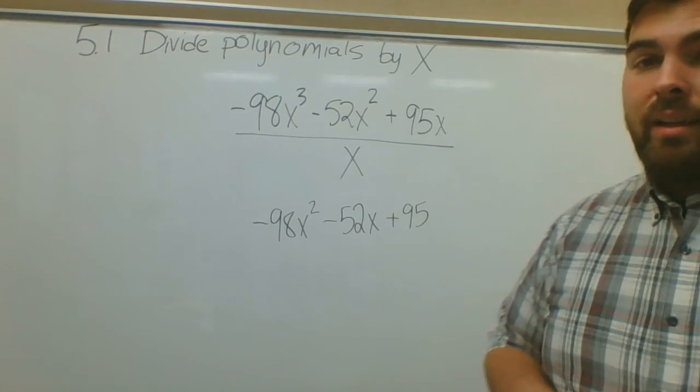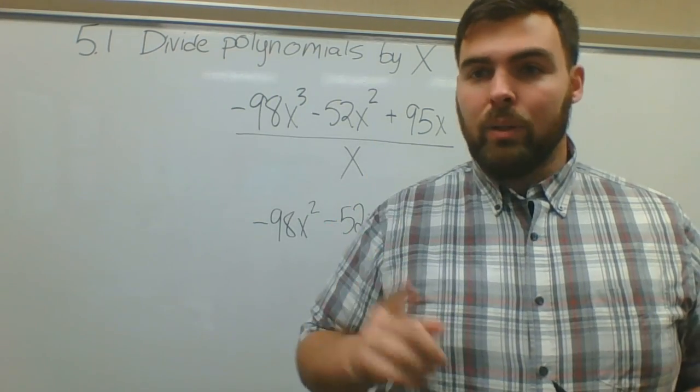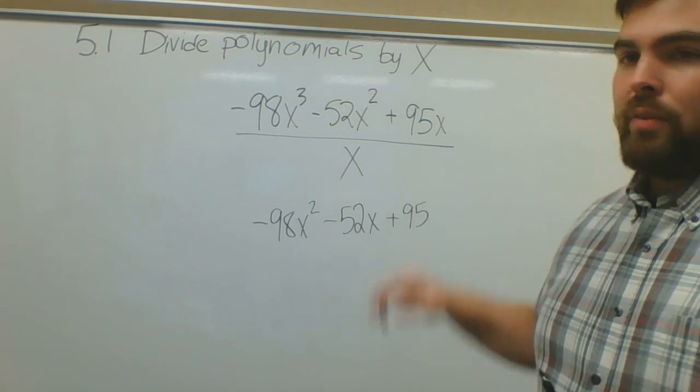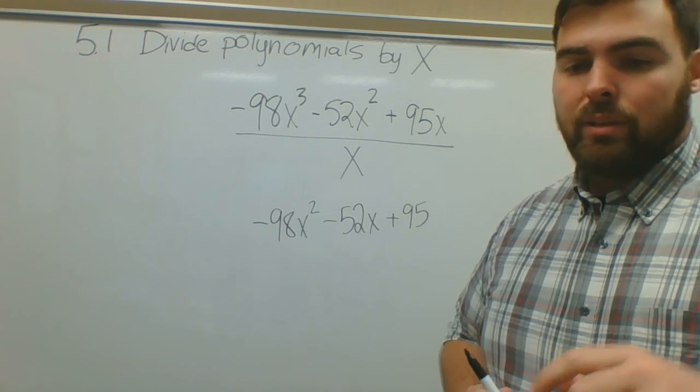You just take one x off of each one. That will get different when we start talking about remainders. This is when you can divide it perfectly. Section two we'll look at remainders.